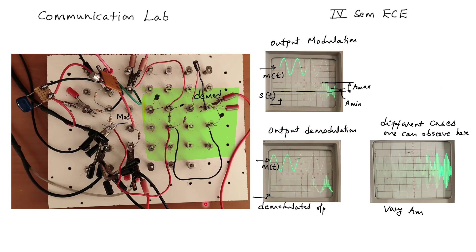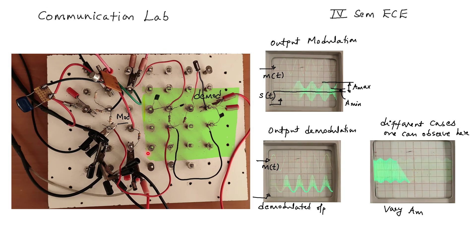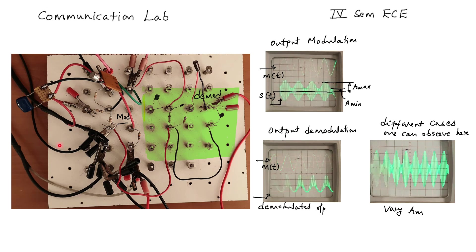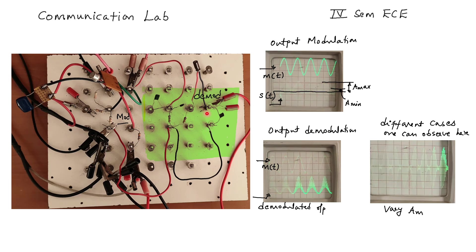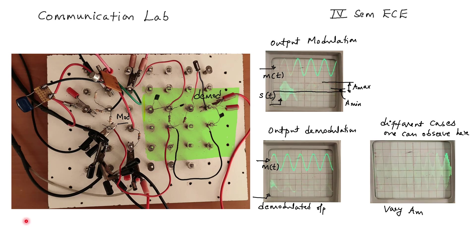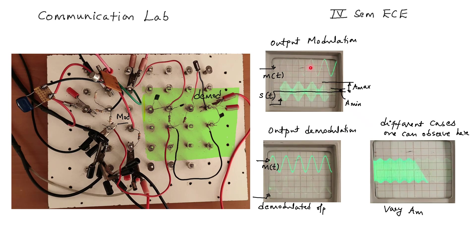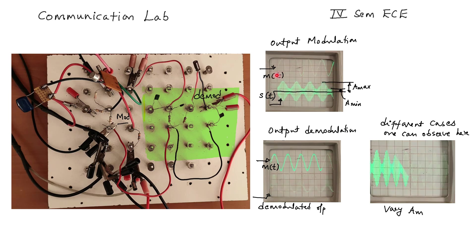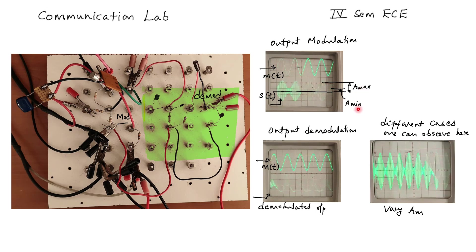This is the breadboard on which two circuits are shown. The first one is the modulator circuit and the second one is the demodulator circuit. Here we are able to observe the output — the AM wave. This is the message signal, and how to calculate A maximum and A minimum is shown here.